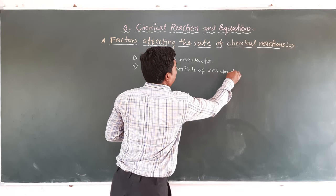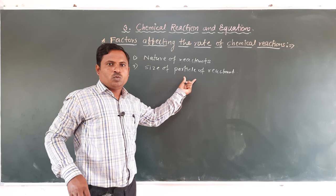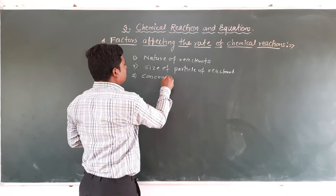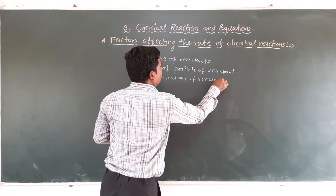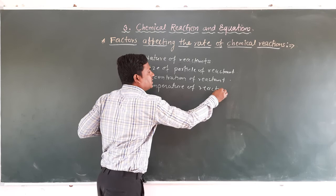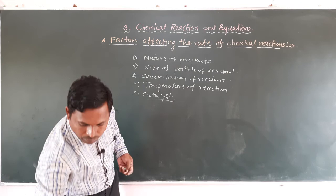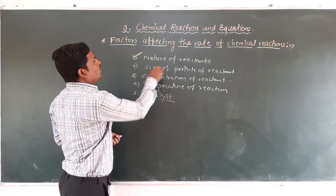The third factor is the temperature of the reactant, and the fourth one is the temperature of the reaction. The last factor is the catalyst. So, there are five factors in total that affect the rate of chemical reaction. In the previous period, we completed two factors — the nature of the reactant and the size of the particle of the reactant.